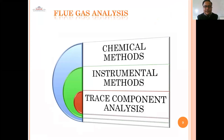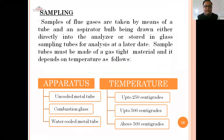There are three methods of flue gas analysis: chemical method, instrumental methods, and trace component analysis. For sampling, flue gases are taken by means of a tube and aspirator, drawn either directly into the analyzer or stored in glass sampling tubes. Sample tubes must be made of gas-tight material. Temperature ranges: uncooled metal tube up to 250°C, combustion glass up to 500°C, and water-cooled metal tubes above 500°C.